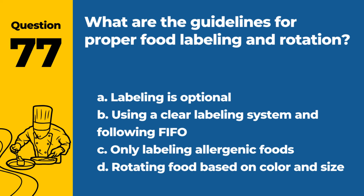Question 77. What are the guidelines for proper food labeling and rotation? a. Labeling is optional. b. Using a clear labeling system and following FIFO. c. Only labeling allergenic foods. d. Rotating food based on color and size. Answer: b. Using a clear labeling system and following FIFO. This ensures food safety and quality.